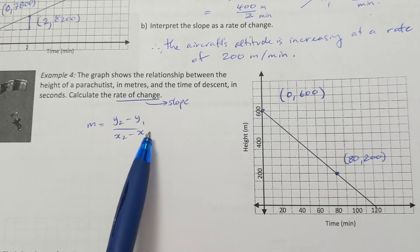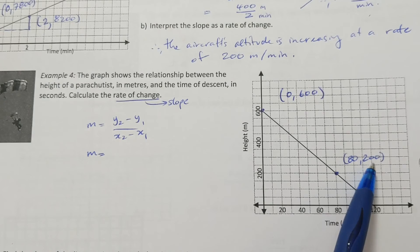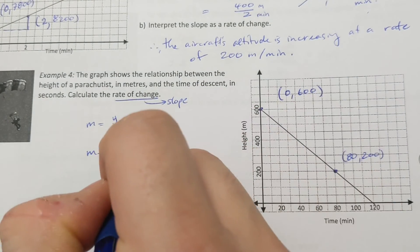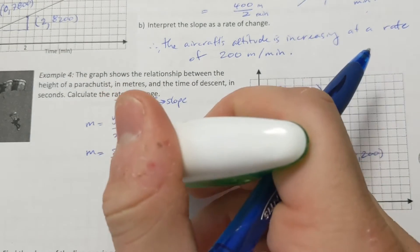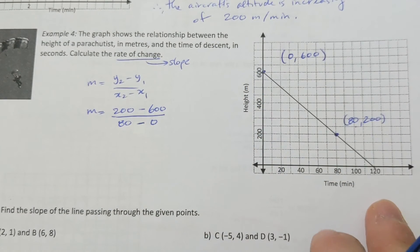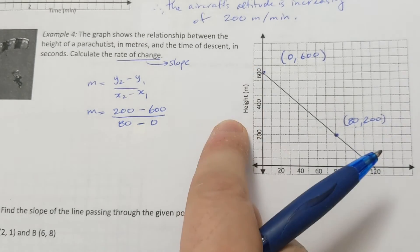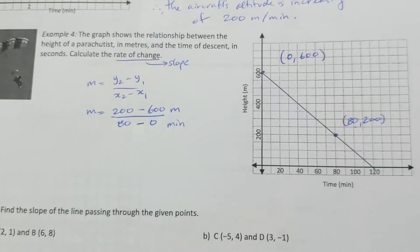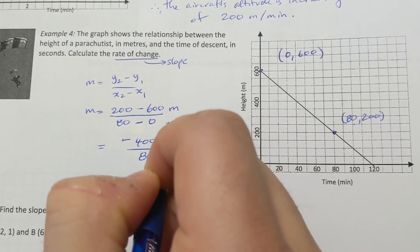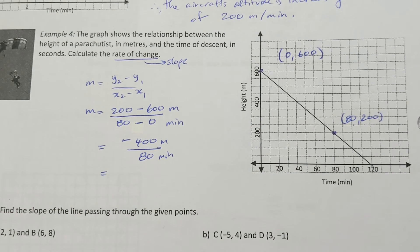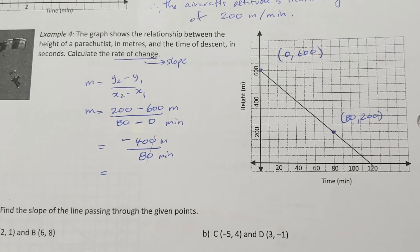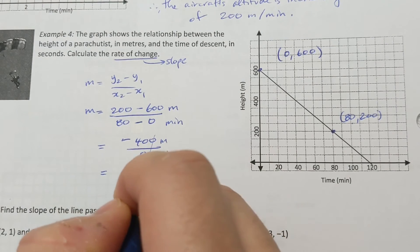Now that I have my two points, I can calculate slope. M equals y2 (200) minus y1 (600), all over x2 (80) minus x1 (0). Since the question has context, I need units — meters per second. That gives negative 400 over 80, which simplifies: negative 40 divided by 8 equals negative 5 meters per minute.